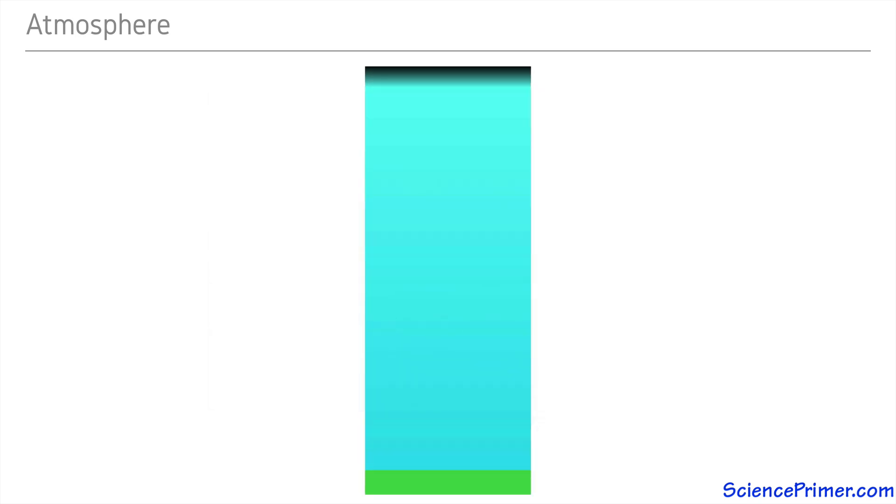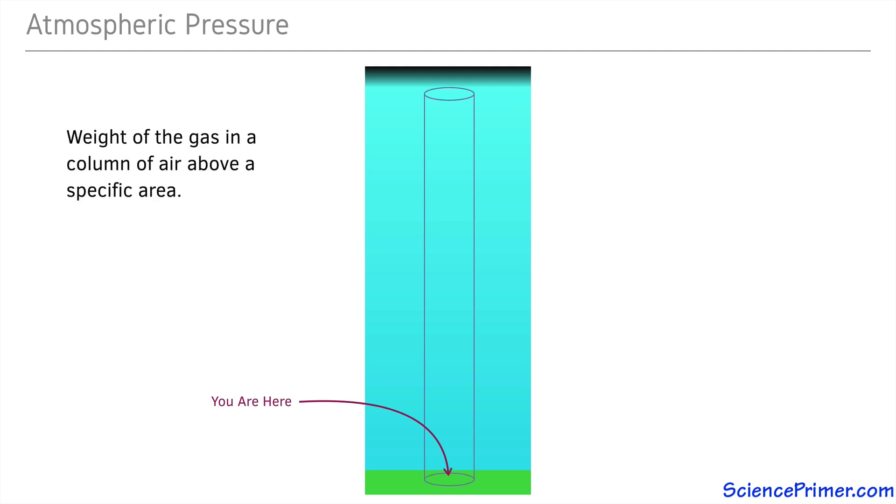All of these gas particles have mass and are pulled towards the Earth by gravity. The weight of the particles in a column of gas above each of us applies a force that we experience as atmospheric pressure, which is simply the weight of the column of gas above a specific area.